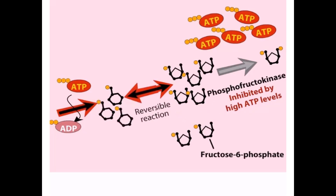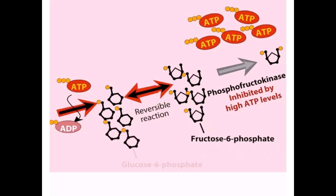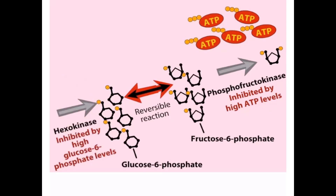Thus, when the cell has an adequate supply of metabolic energy available in the form of ATP, the breakdown of glucose is inhibited by the inactivation of these enzymes. When ATP levels are low enough, glycolysis proceeds with the production of fructose 1,6-bisphosphate.